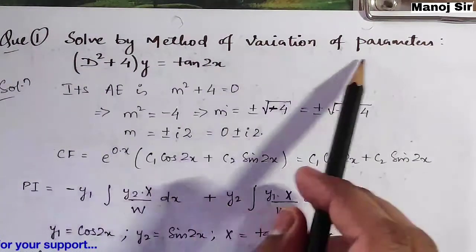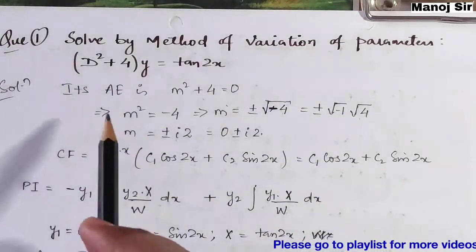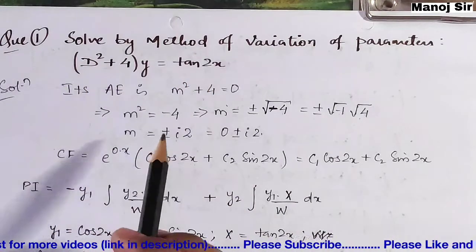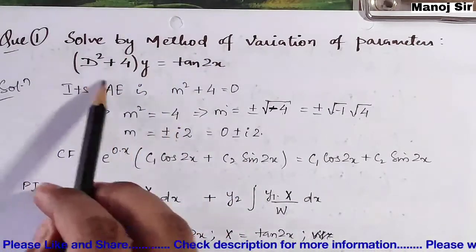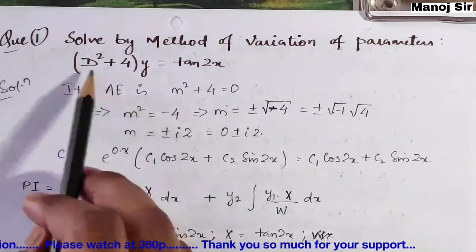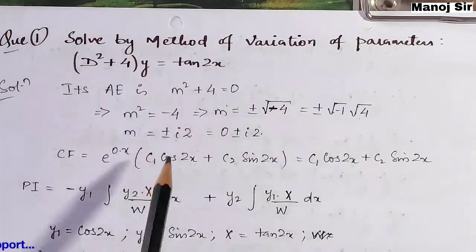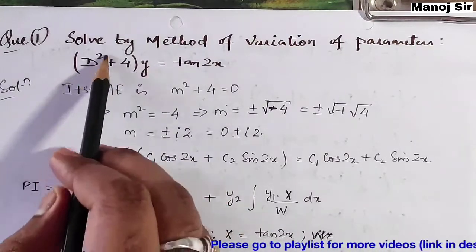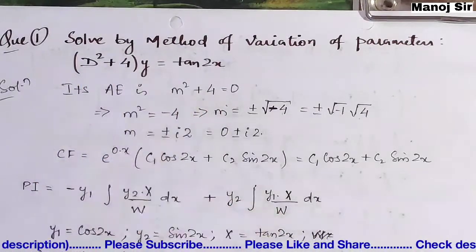The question says: solve by the Method of Variation of Parameters — (D² + 4)y = tan 2x. The equation is already in symbolic form. To find the auxiliary equation, we equate the coefficient of y — that is D² + 4 — to zero, replacing D with m. So the auxiliary equation is m² + 4 = 0.